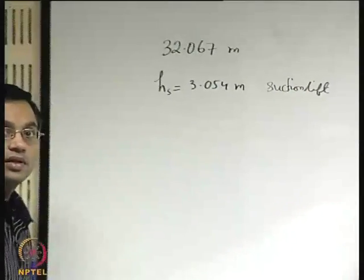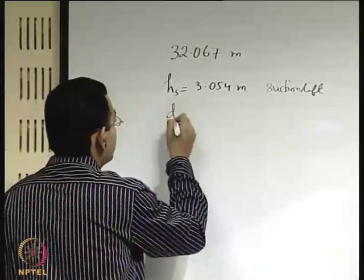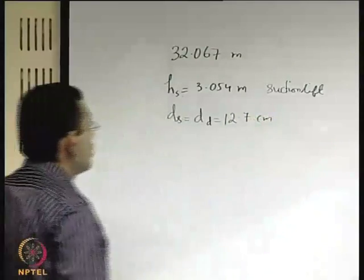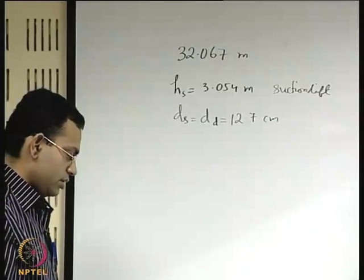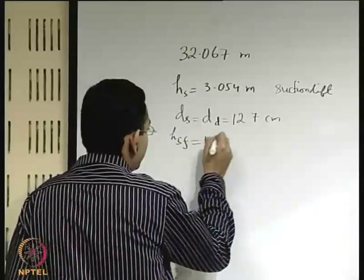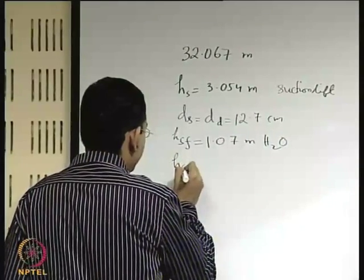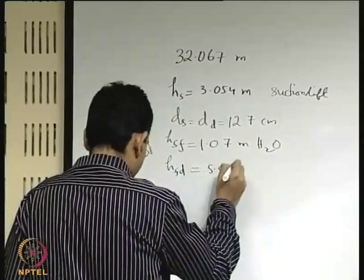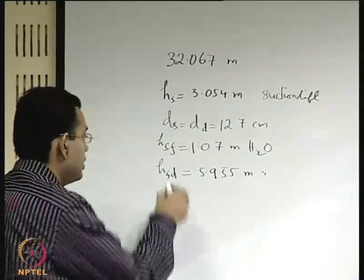The suction and the delivery pipes are both 12.7 centimeter in diameter. The loss of head in the suction pipe is 1.07 meter of water, and that in the delivery pipe is 5.955 meter of water.